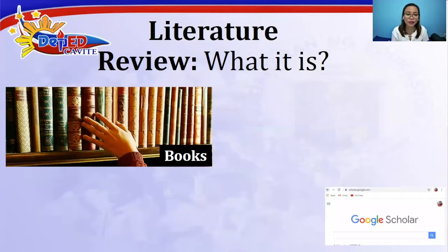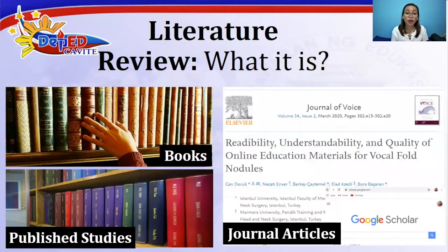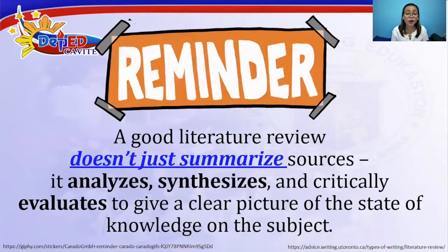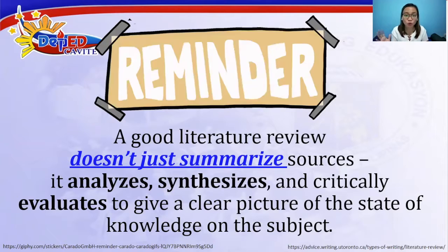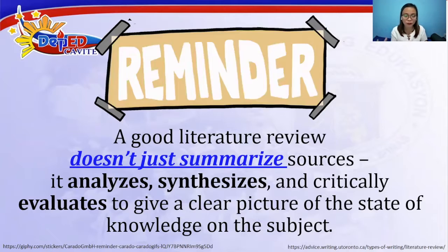The sources of literature review include books, e-books, or hard copy books, published studies, and journal articles that could be found on the internet. One reminder is that a good literature review doesn't just summarize sources — it analyzes, synthesizes, and critically evaluates to give a clear picture of the state of knowledge on the subject.